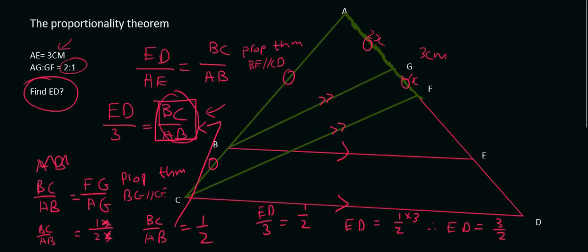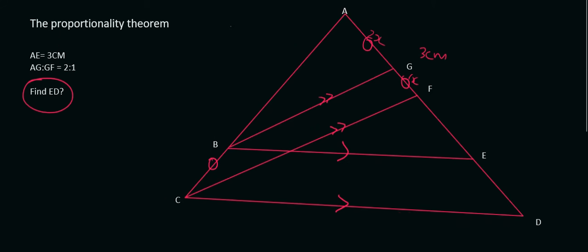So in summary, you always want to start at the question. So the question was ED. So straight away we try to work out a triangle that has ED. And what we found was that the big triangle had ED. So we said that ED over AE, because AE we have, is equal to BC over AB. So can you see the opposites? ED is opposite to BC. And remember we're looking at these parallel lines now. And then AE was the same as AB. So that's why we have this and this over here.